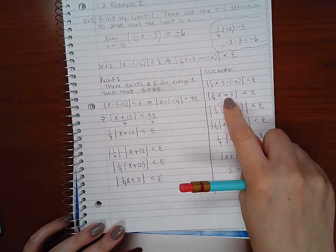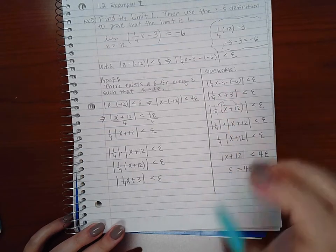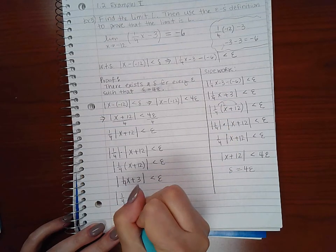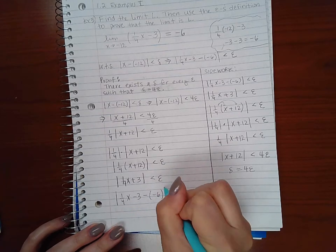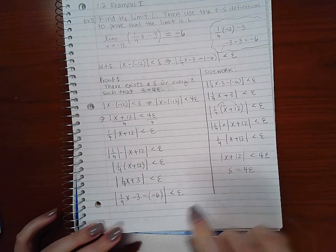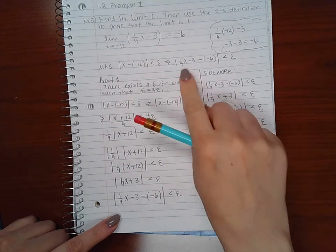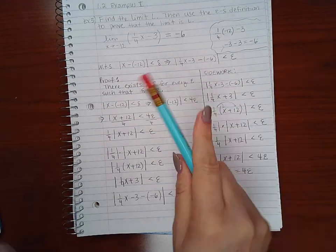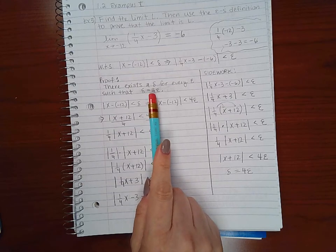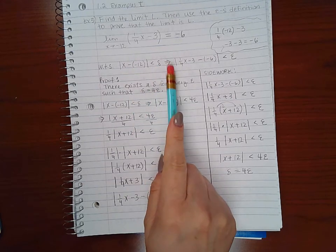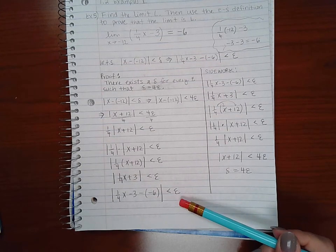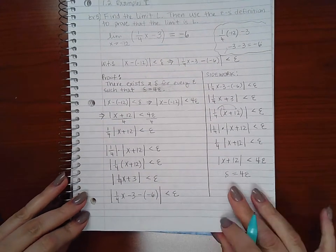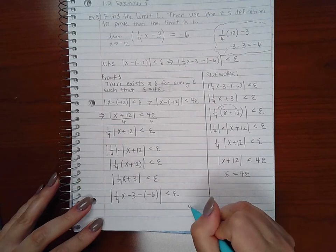Then I will need to break apart that 3 into negative 3 and negative negative 6. And so now this is equivalent to this. So I have shown that for the particular delta, this statement will imply that statement, and therefore I am done with my proof.